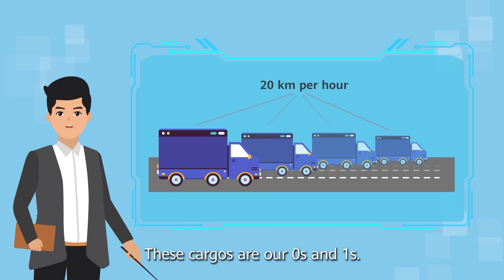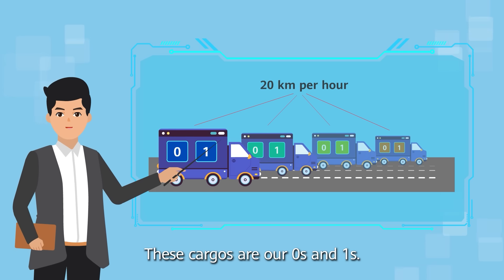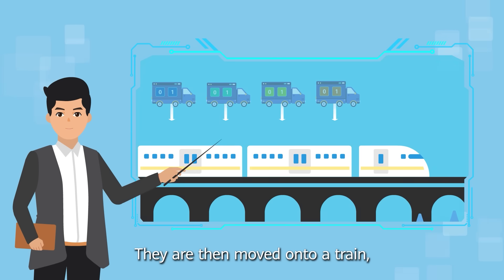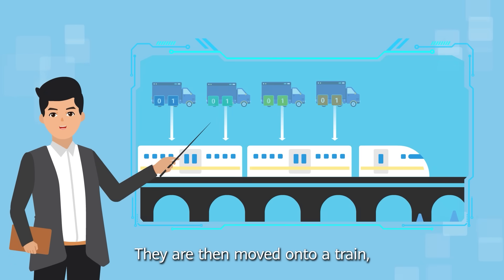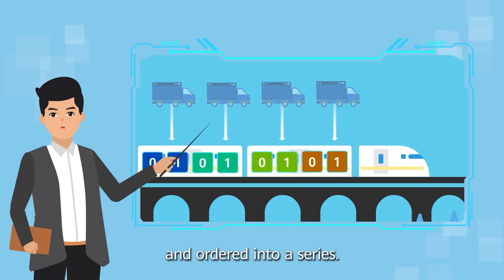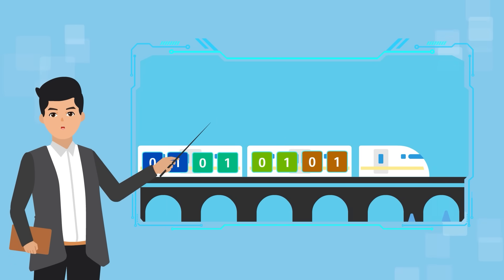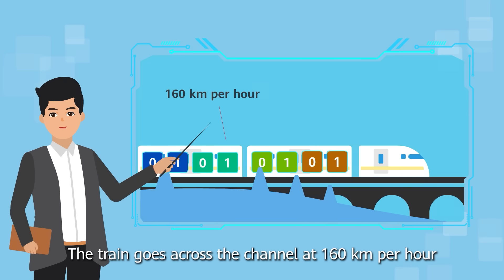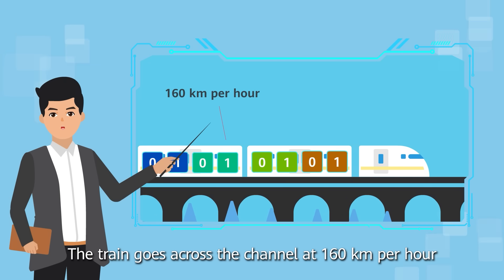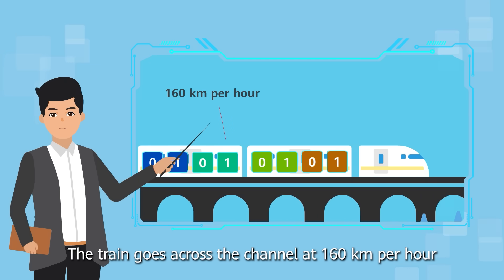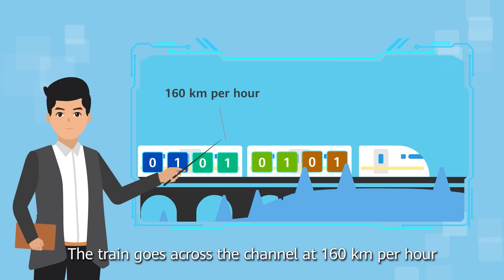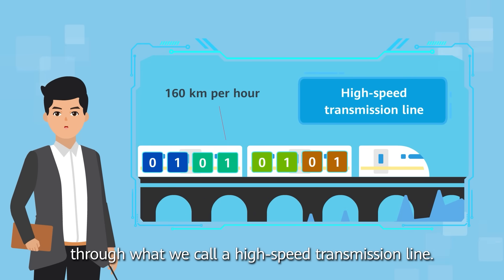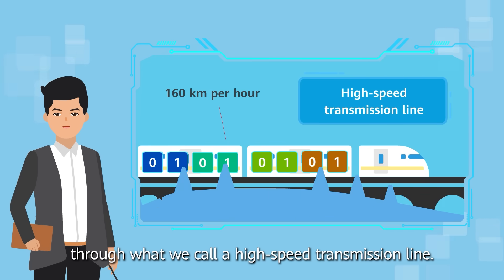These cargos are our zeros and ones. They are then moved onto a train and ordered into a series. The train goes across the channel at 160 km per hour through what we call a high-speed transmission line.